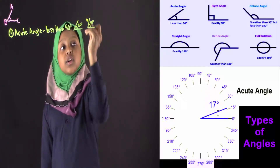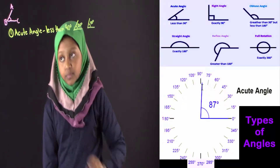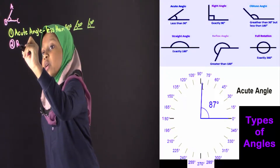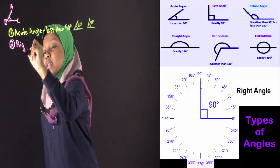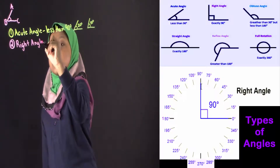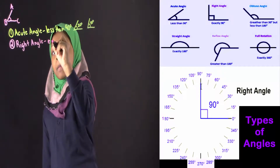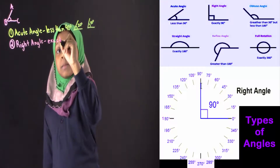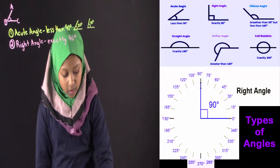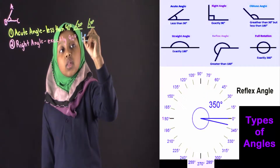So if the acute angle turns to 90 degrees, it's not going to be an acute angle. It's going to turn into a right angle. So over here, I'm writing right angle. In our visual figure, we see the right angle. The definition of right angle is it's an angle that is exactly 90 degrees. Over here, I'm going to draw an angle. This angle is exactly 90 degrees, so this angle is a right angle.